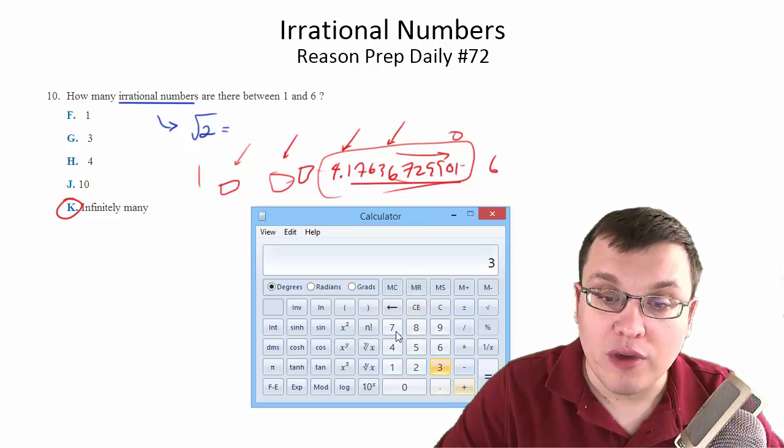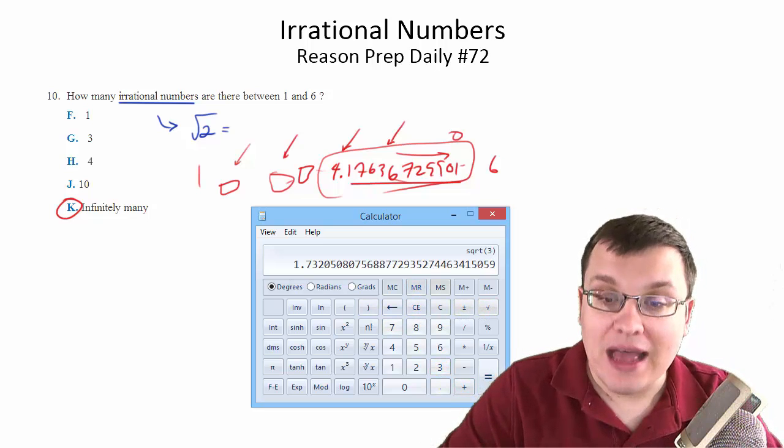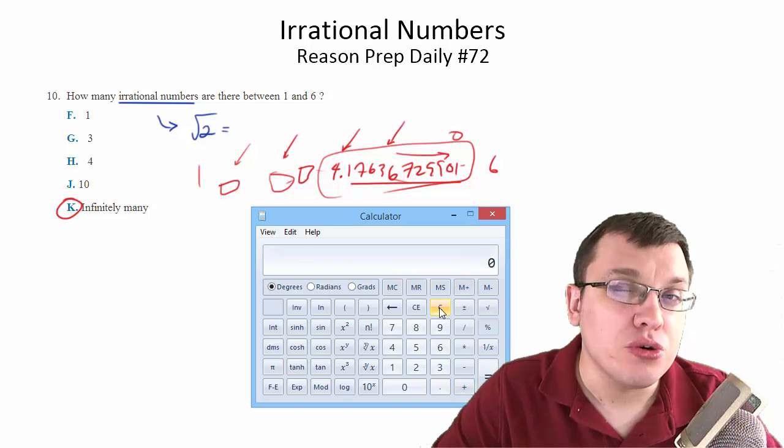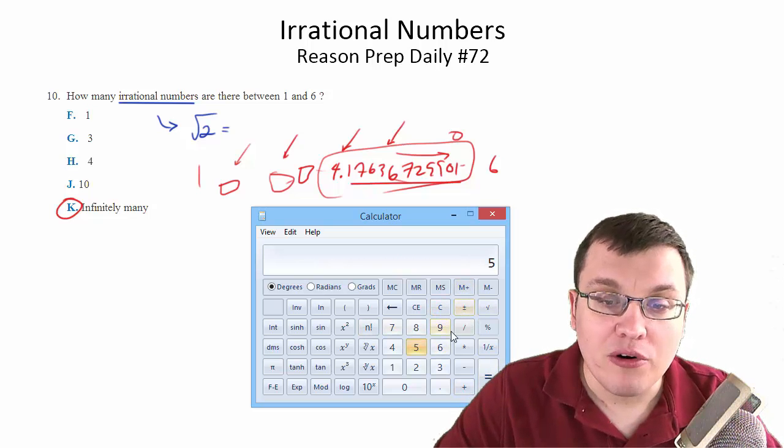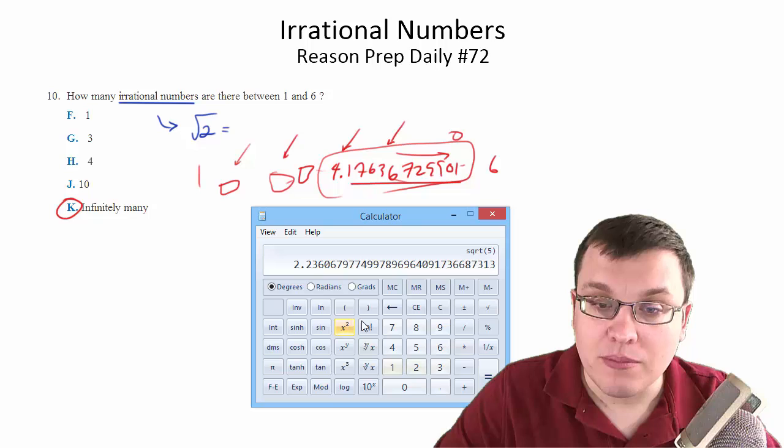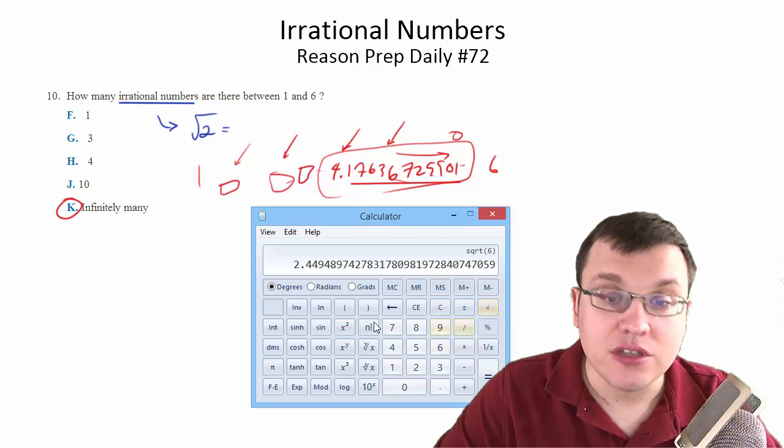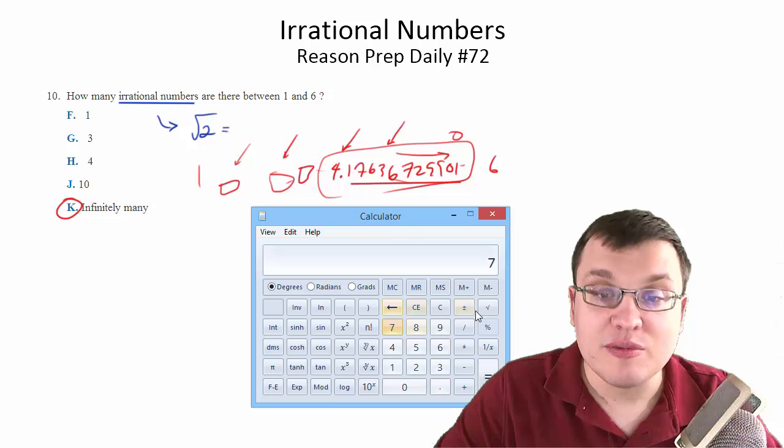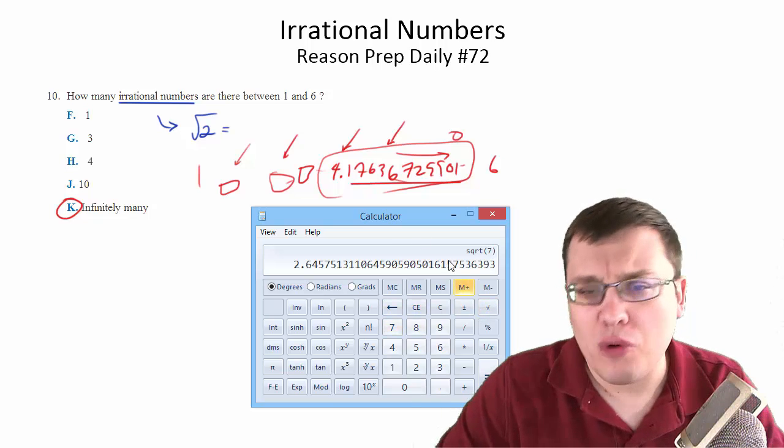So how about the square root of 3? Square root of 3 would get me that. Square root of 4 is 2, so that doesn't really work. But the square root of 5 gives me another irrational number. The square root of 6 will give me another irrational number. The square root of 7 gives me another irrational number, and so on and so forth.